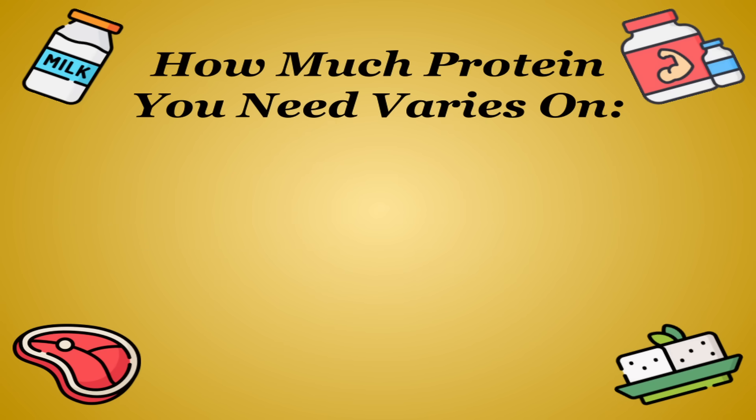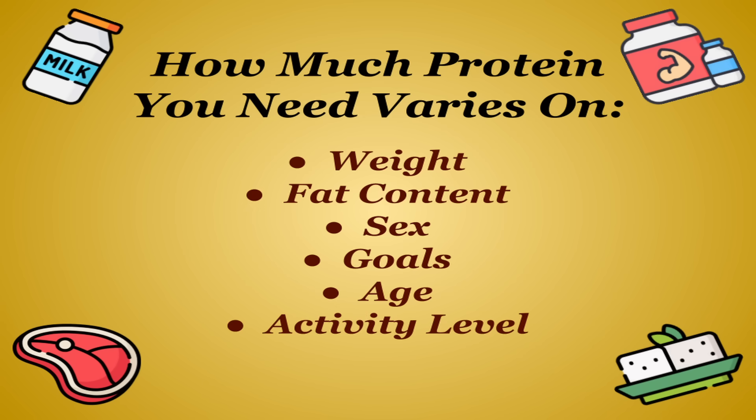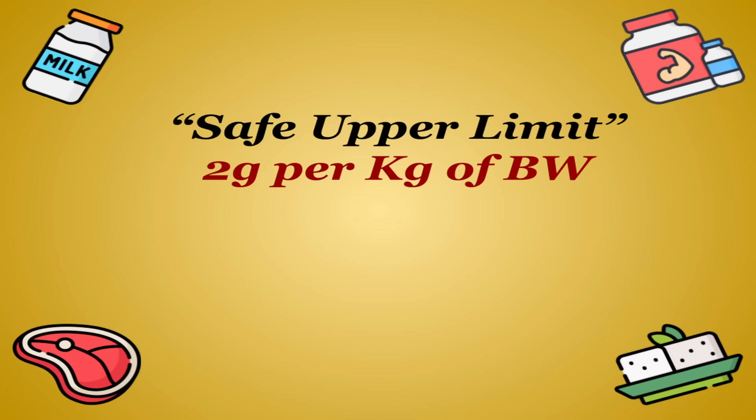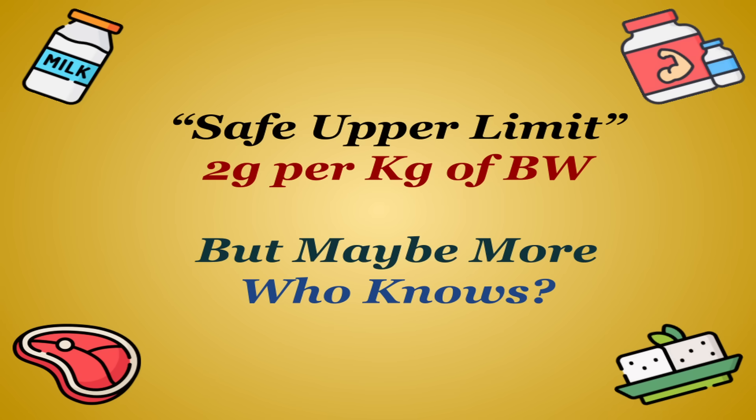How much protein you need can vary wildly on a number of things. Weight, fat content, sex, goals, age, activity level, the list goes on. A generally agreed upon safe upper limit is 2 grams of protein per kilogram of body weight, but many experts believe the average person can handle even more without repercussion.